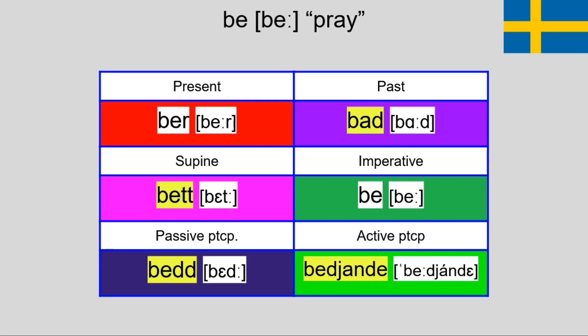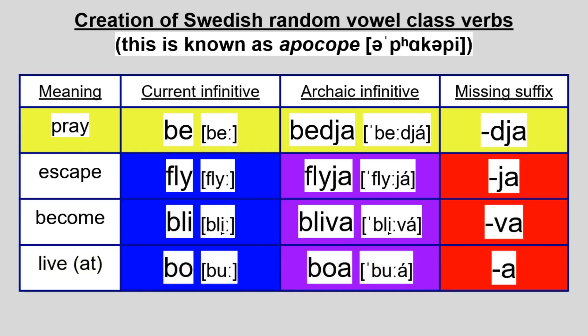Likewise, the verb 'be', meaning 'pray', has a past tense form of 'bad', and an active participle of 'bejande'. Wanna guess what its older form was? That's right — 'bedja'.